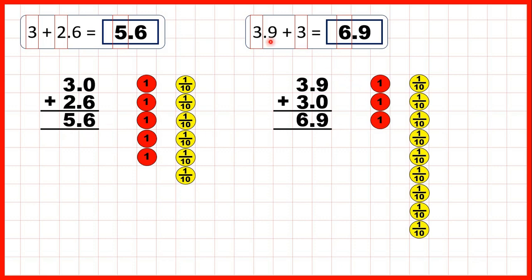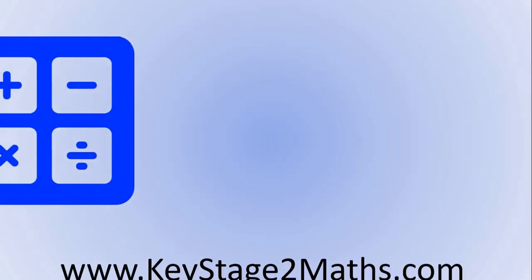For this question we started with 3.9, so that's three ones and nine tenths, and we were adding three. We can add one, two, three ones, and that gives us a total of six ones. We still have our nine tenths, so that's 6.9.